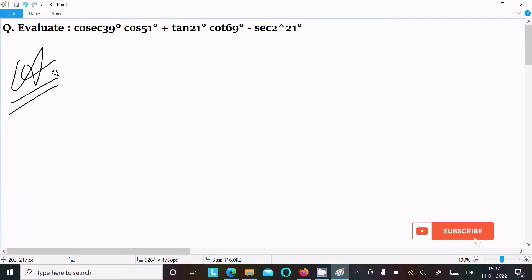So let's see the answer. First, writing the given expression: cosec 39° cos 51° + tan 21° cot 69° - sec² 21°. So this cosec we can write as cosec(90° - 51°).